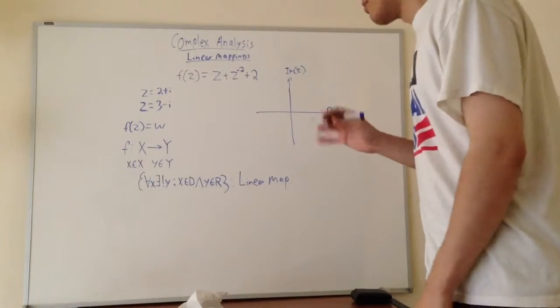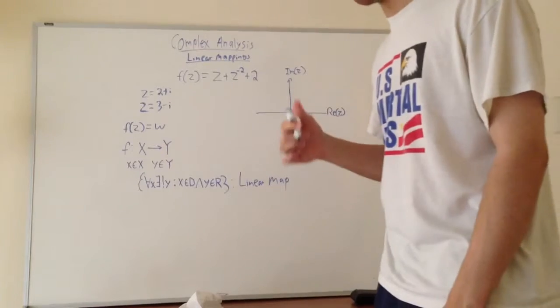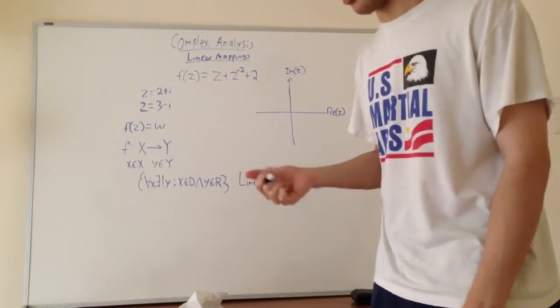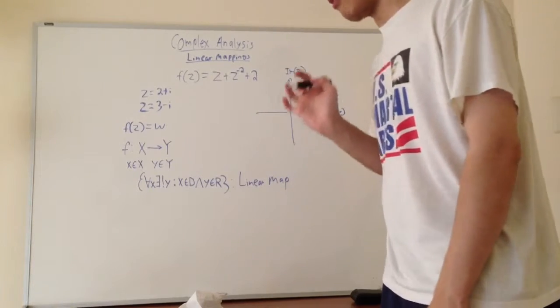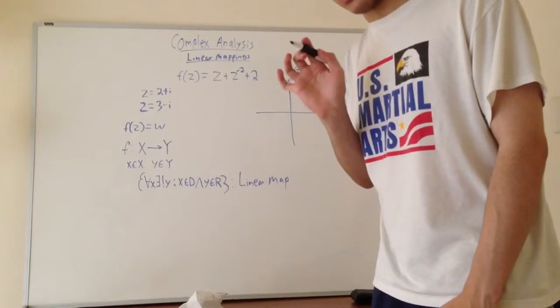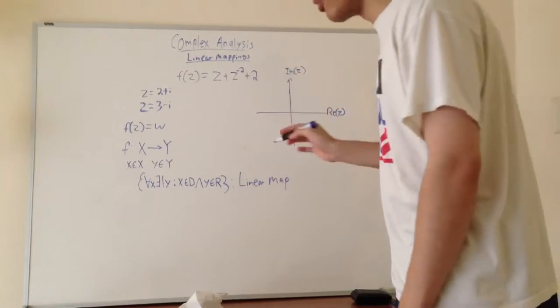All right, so in this video I'll start talking about linear mappings, which is the simplest type of complex function. Basically, a linear map in complex analysis simply means that for every x there's exactly one y that maps to.